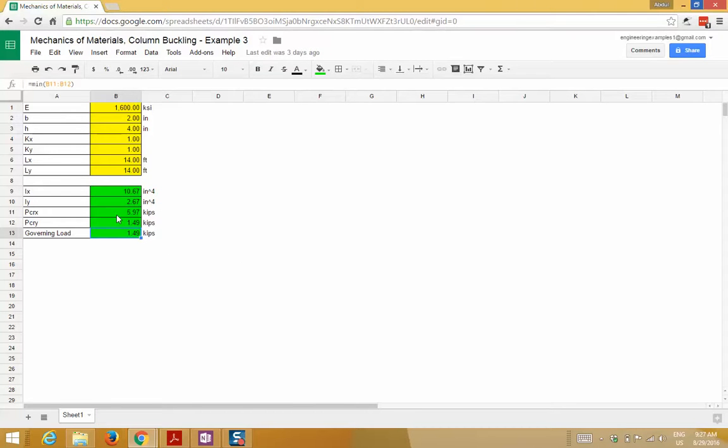In the spreadsheet, I calculated the critical buckling load about the x axis and the critical buckling load about the y axis, and then I just got the smaller one. That's one approach. But since we already know that the effective length, k times l, is equal for both axes, we don't even have to do that. We can just do how we did it in our calculations.